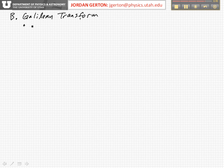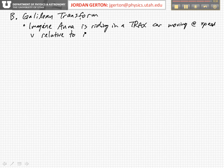Let's start this off by setting up a thought problem. Imagine that we have two people, Anna and Bob, and Anna is riding in a tracks car moving at speed V relative to Bob who is standing on the ground.